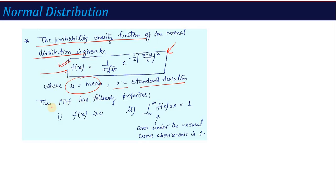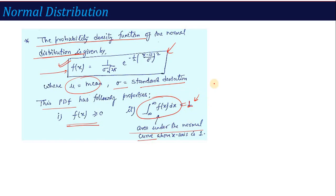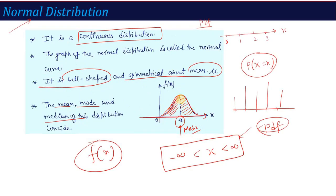We have already studied the PDF properties: the probability of f(x) is always greater than or equal to 0, and the second property is that if you integrate f(x) over the entire range, it will always equal 1. This is a very important property, and we have solved some problems based on this in previous lectures. This mainly means the area under the normal curve over the x-axis is always equal to 1.